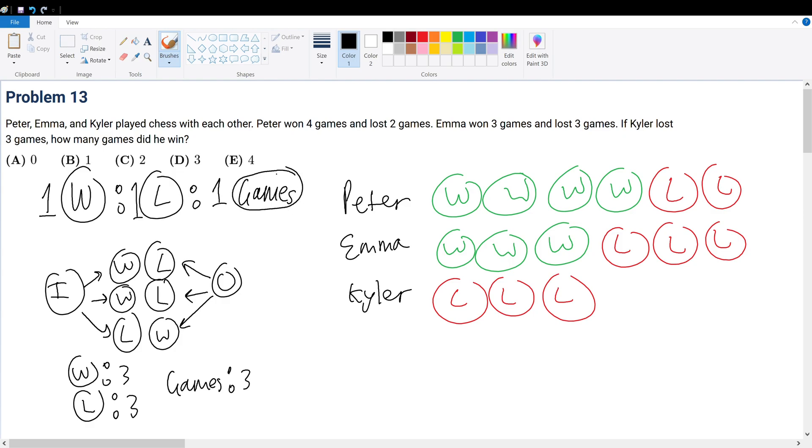So that is the idea here. With this big idea, let's apply it to this overall question. Peter won 4 games and lost 2 games. So that means there are 4 wins represented in green. There are another 3 wins by Emma. So in total, we have 7 wins.